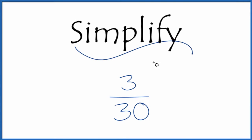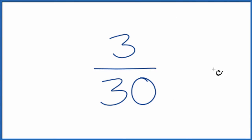All right, let's simplify the fraction 3/30. And here's how we're going to do it. We want to find another fraction that's equivalent, has the same value as 3 over 30, but we've reduced or simplified it to its lowest terms.